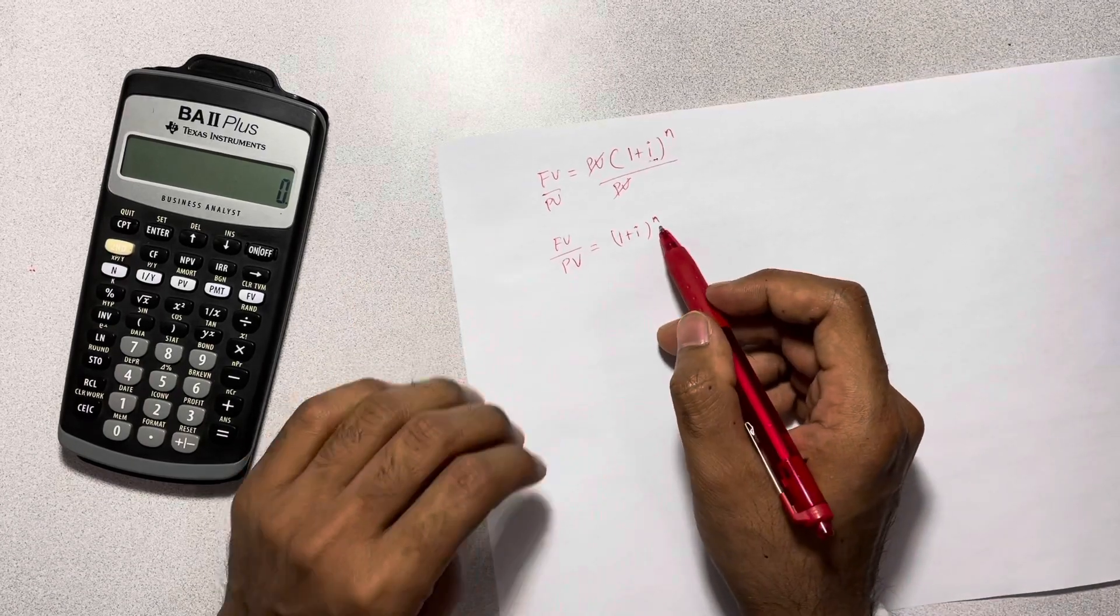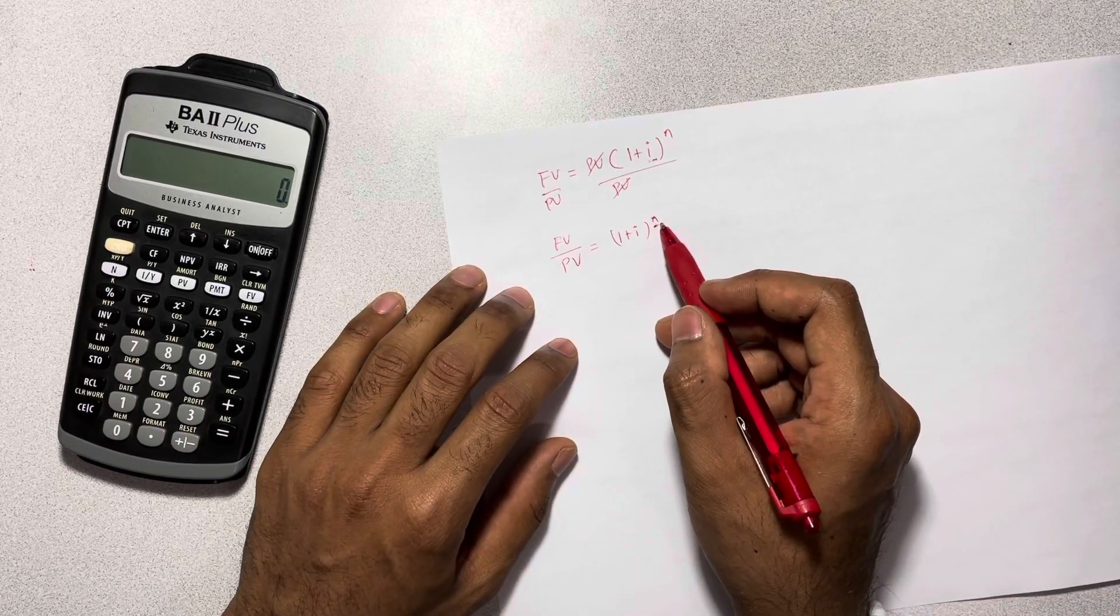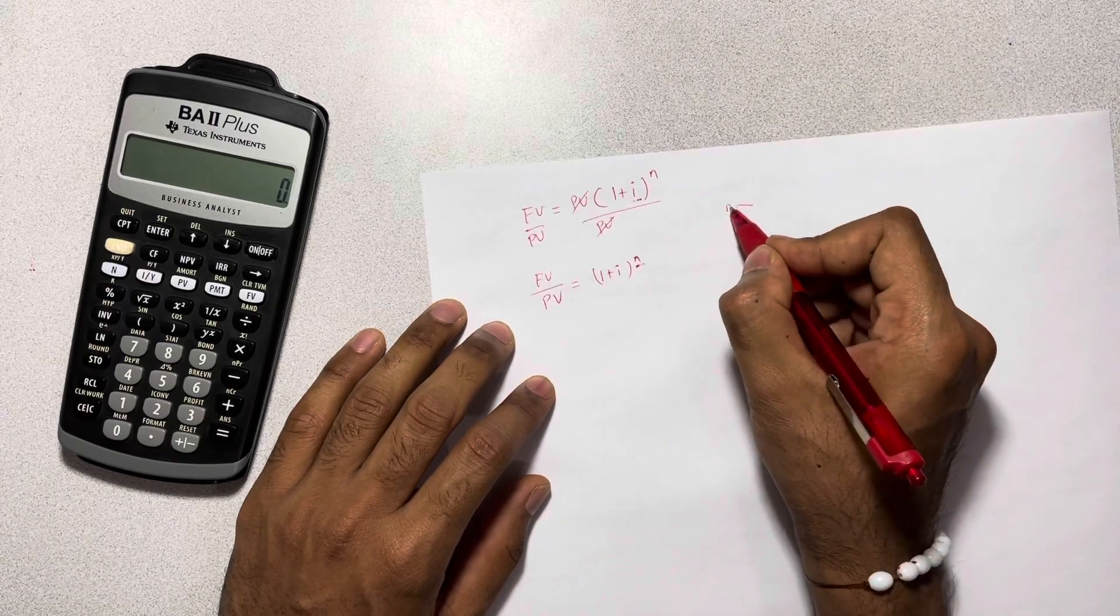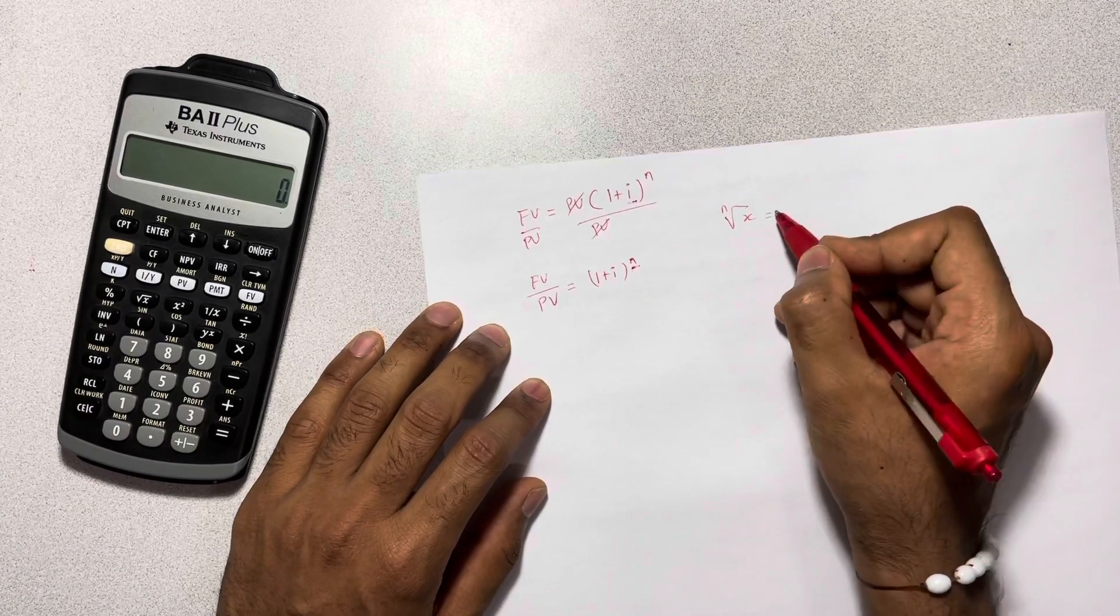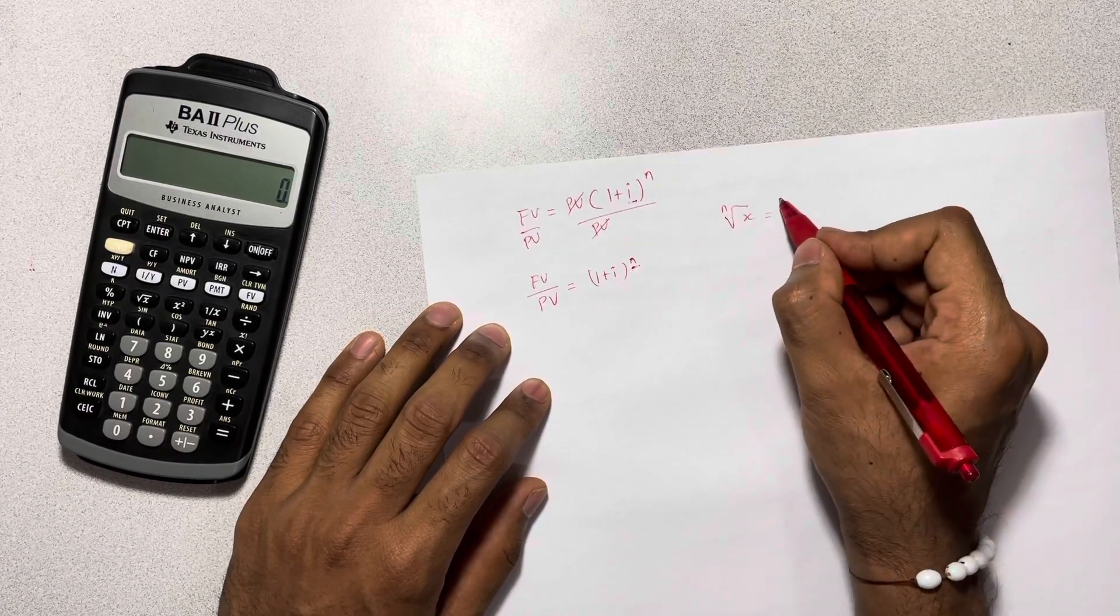Now, the second part is to get rid of this power of n. In order to do that, what we can do is take the nth root of whatever the item is, and we can also write the nth root as 1 over n.